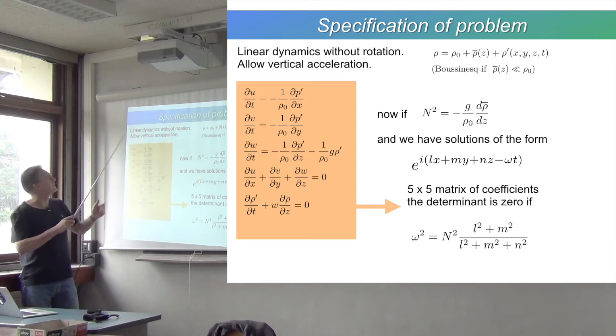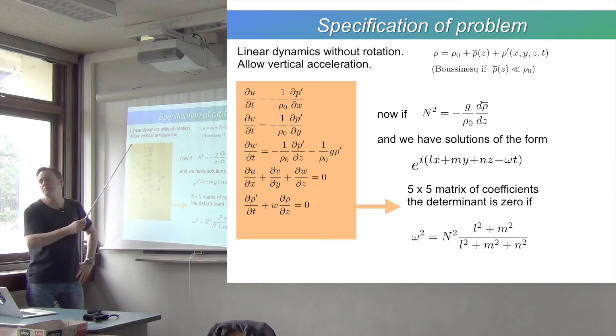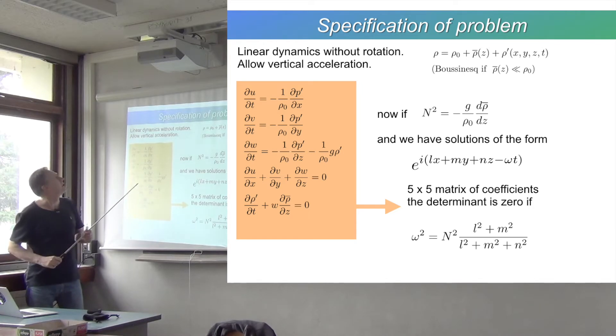What we'll do is we'll just write down the equations. Linear dynamics. We'll take away the rotation, so no worries about the Coriolis force this time. We're at small scales, so we can ignore the Coriolis force. And we're going to allow vertical acceleration. That's something different.